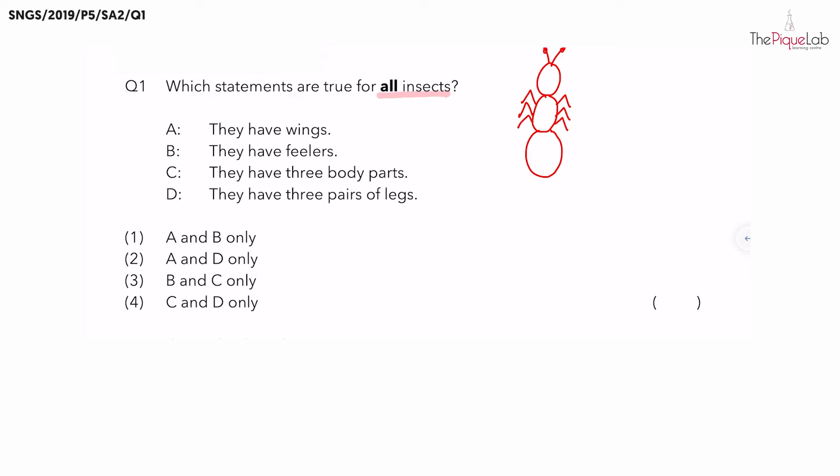Only some type of ants have wings. So let's take a look at the four statements there. Is it true that all insects have wings? This is not true. What about the next statement? Yes, all insects have feelers. And all insects have three body parts and three pairs of legs. So we have three statements which are true.